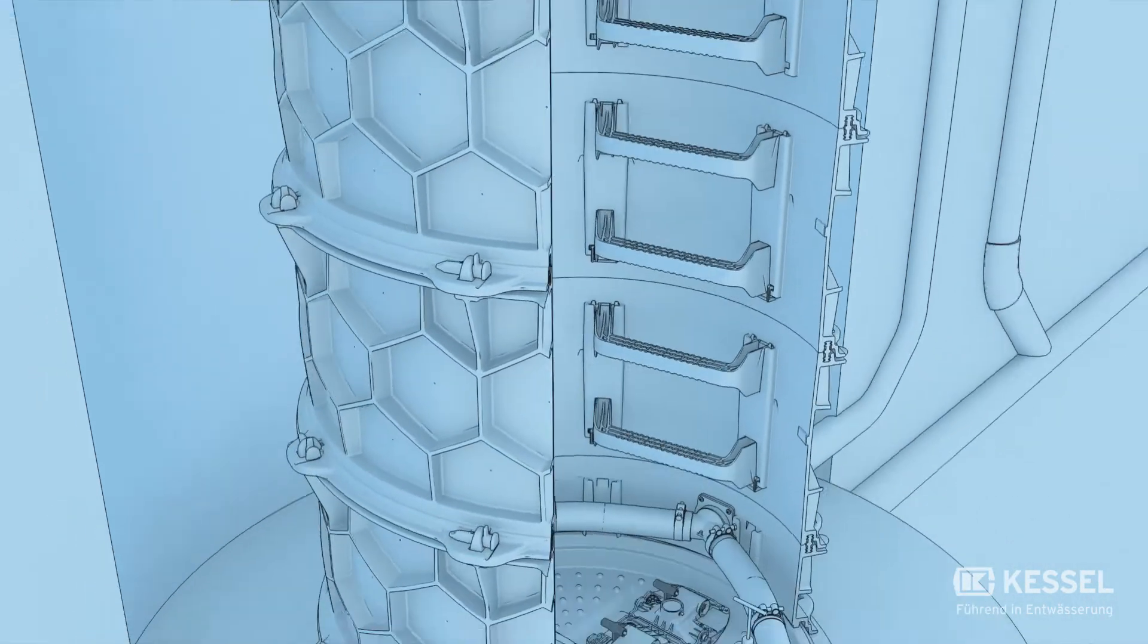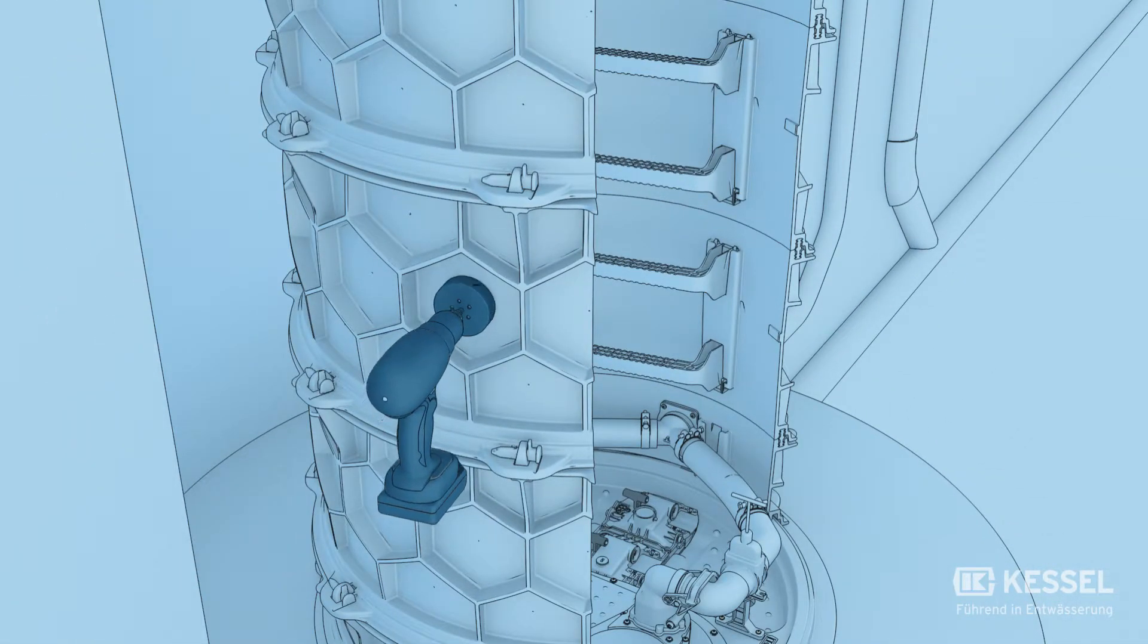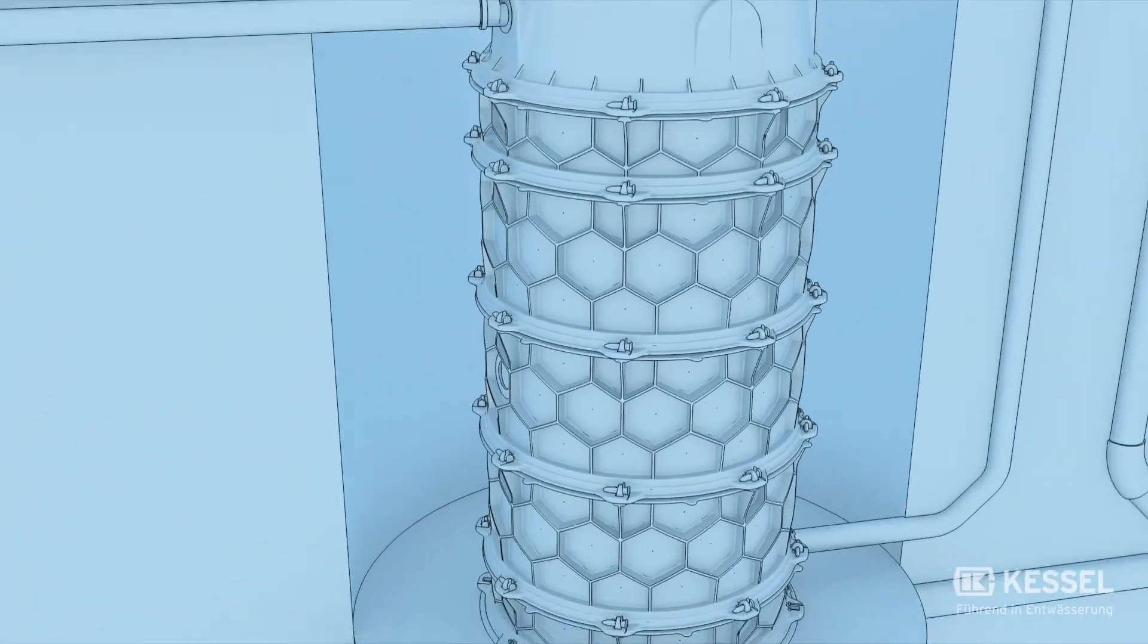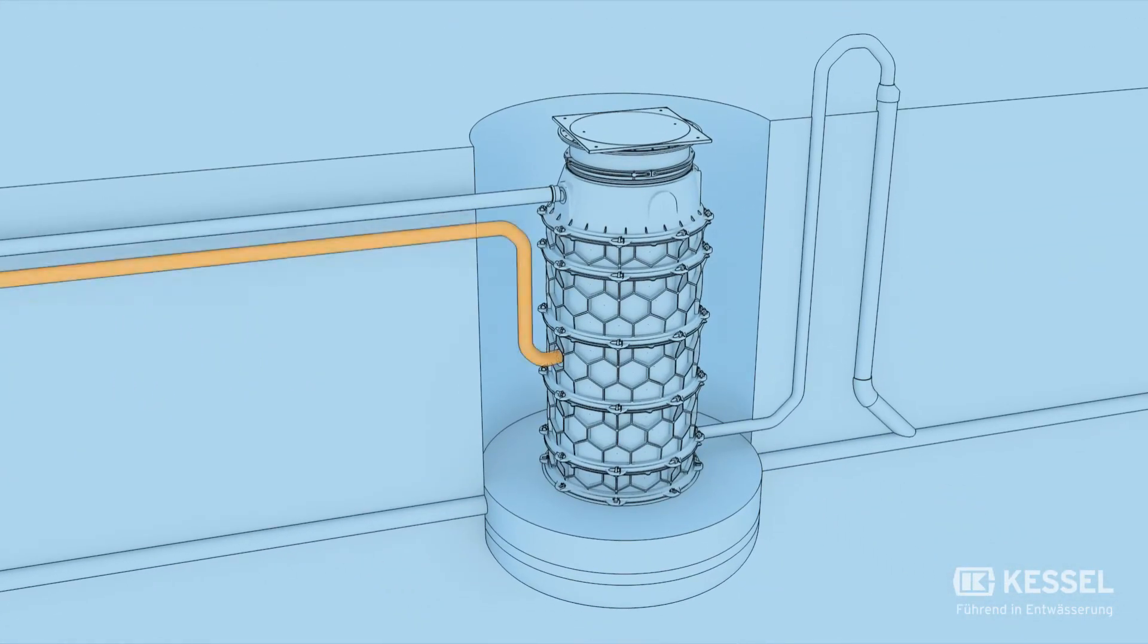Now, we drill a DN100 feed-through into a tapping surface or a tapping point and then insert the feed-through seal. We insert the cable tube into the feed-through and connect it to the switching device. Attention! The cable tube must be installed at an incline.